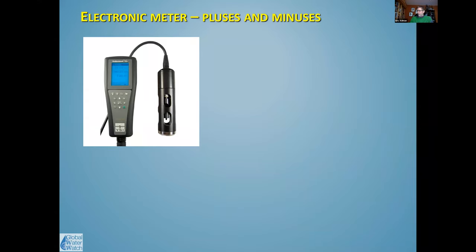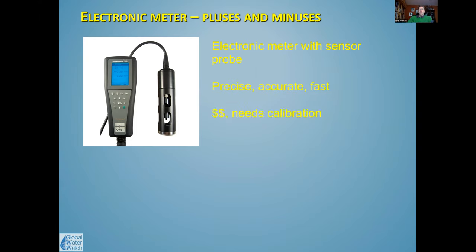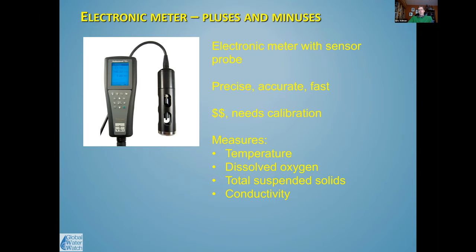With an electronic meter, the plus is that it's very quick and very accurate. The downside is that they're expensive — this type of probe costs a few thousand dollars by itself, needs calibration with specific calibration fluids every time you go out, and annual maintenance is pretty costly. You can get probes to measure a wide variety of variables, and they provide very detailed, accurate readings.